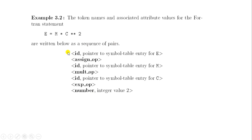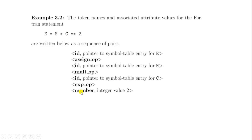The token name influences parsing decisions while the attribute value influences translation of tokens after the parse. For the example E = M * C ** 2 in Fortran: 'E' is an id with a pointer to the symbol table entry for E; the assignment operator '='; 'M' is an id with a pointer to the symbol table entry for M; the multiplication operator; 'C' is an id pointed to the symbol table entry for C; the exponentiation operator; and finally the number 2 as an integer literal.